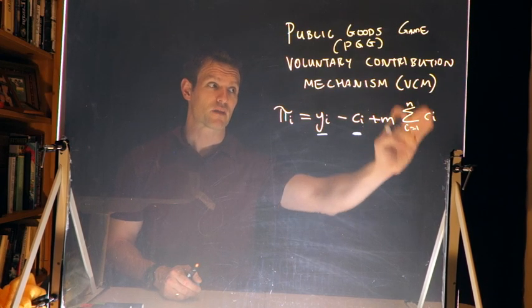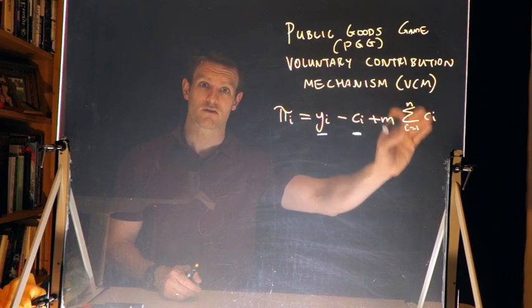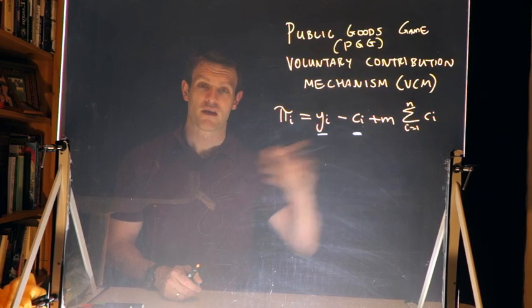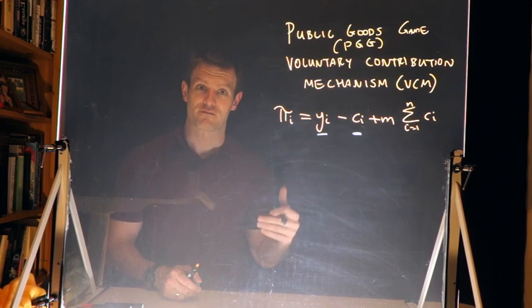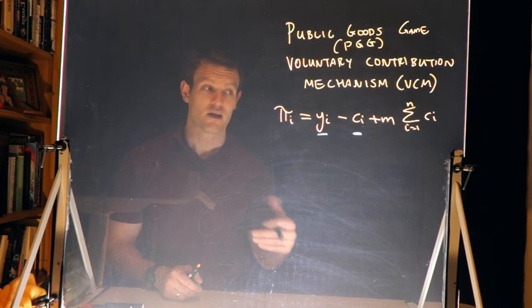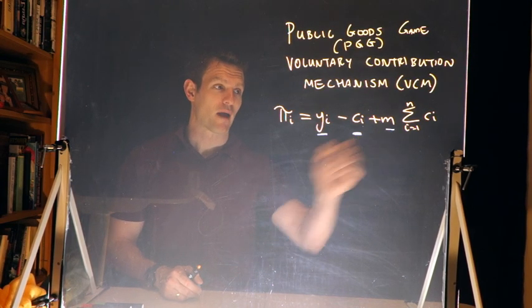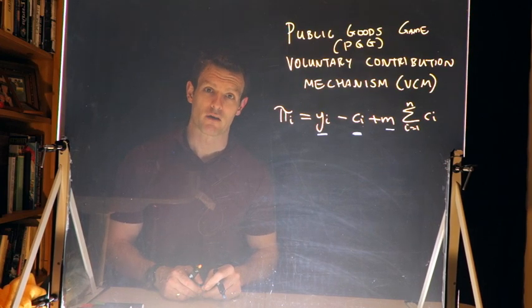If other people then contribute to the public good, we take that entire sum of what everyone contributed, say 5, 5, 5, and 5, if everyone contributed something, that would be $20, and then we'd multiply that by m to find out what my total payoff would be.